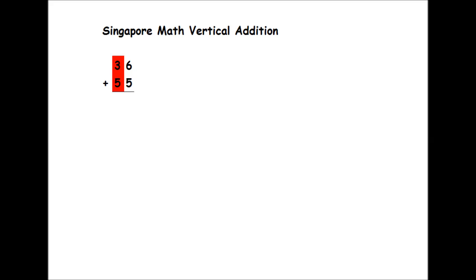So this is our tens column. And this is our ones column. And we're adding these place values together to get our answer.